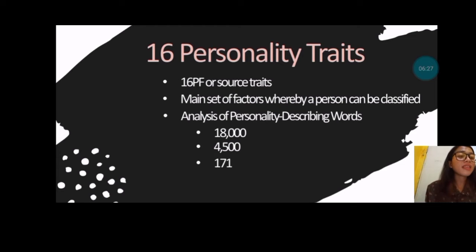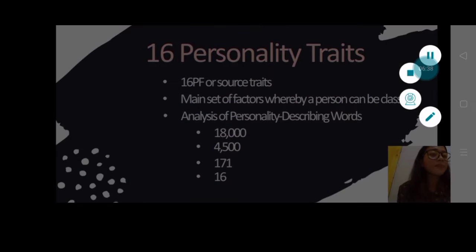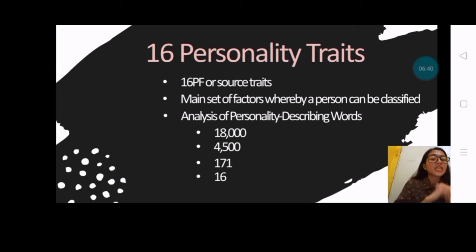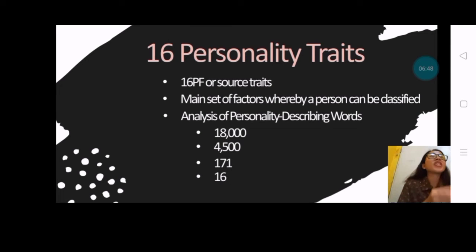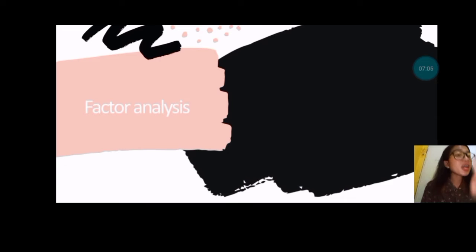Out of 23, 16 of them are the most frequently studied, which are called the personality traits. So the question is, how did he arrive at these factors? From 18,000 to 4,500 words to 171, until finally 16 personality traits — what he used is factor analysis.